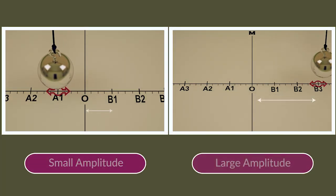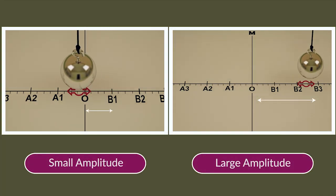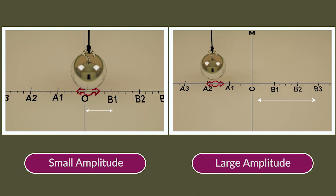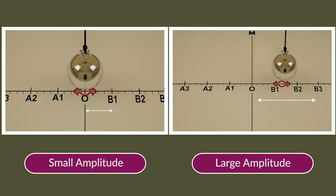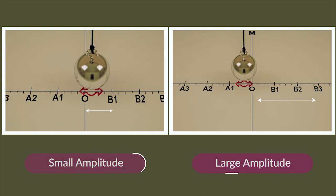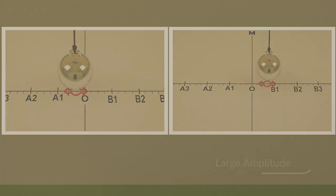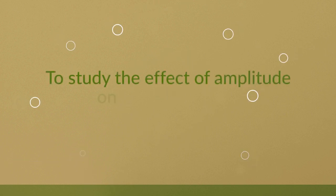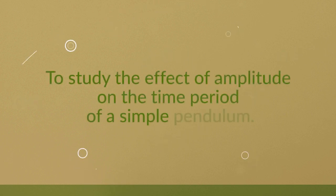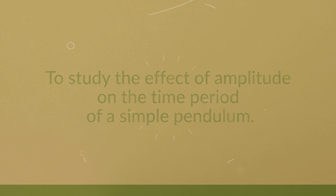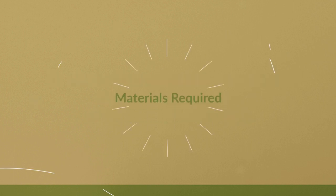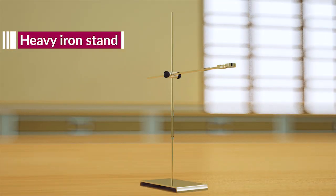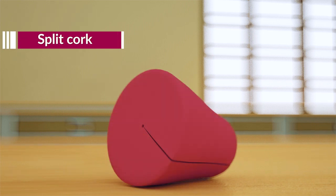Will the time taken for an oscillation change if we increase the amplitude, or the distance from the mean position O? Let's experiment and find out. Aim: to study the effect of amplitude on the time period of a simple pendulum. Materials required: a heavy iron stand, a split cork,